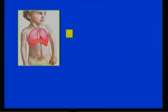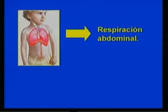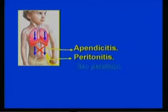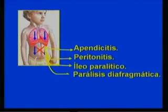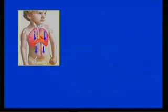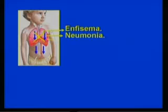En los niños hasta los 6 a 7 años, la respiración es de predominio abdominal. Si la pared abdominal no excursiona con la respiración, se sospechará algún compromiso intraabdominal como apendicitis, peritonitis, íleo, parálisis diafragmática y grandes cantidades de líquido o aire en el abdomen. Si la respiración fuese abdominal exclusiva, pensarán entonces en un enfisema, una neumonía u otra patología pulmonar.